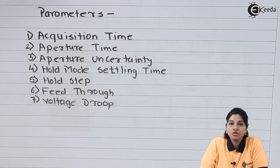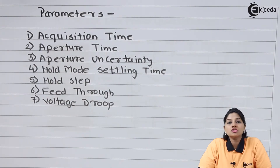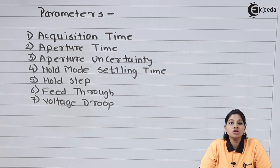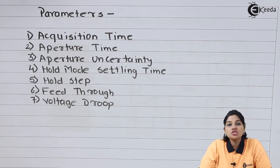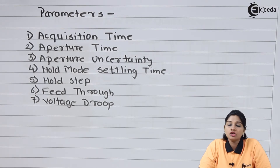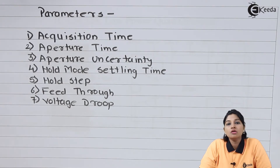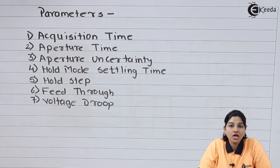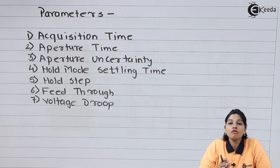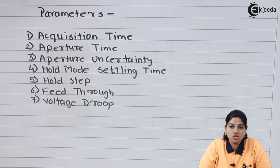The first parameter is acquisition time. The acquisition time is the time required by the capacitor to reach or to hold the sample value of the input signal. The acquisition time should be as small as possible — ideally zero — but practically that is not possible. As the input is applied, the capacitor should charge very quickly to reach the level of the instantaneous value of input voltage, and that time period is called acquisition time.